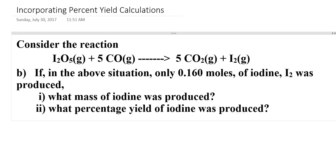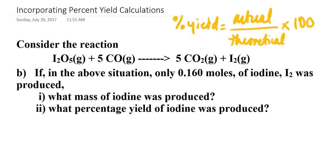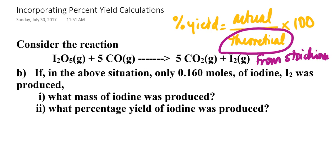Another thing to keep in mind: what if I have to fold in a percent yield calculation relative to a limiting reagent problem? Well, the limiting reagent portion of the stoichiometry problem is actually still exactly the same. The only thing that's different is, once you get to the mass of product that was produced, you have to keep in mind the equation for percent yield. The percent yield is equal to the actual yield divided by the theoretical yield times 100. When we run stoichiometry calculations, we're calculating theoretical yield — and the actual yield is usually provided to you in the problem.